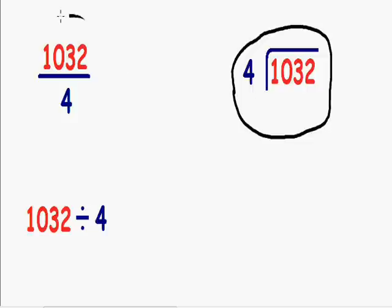Sometimes they could give it to you as a fraction. So notice how the top number of the fraction or the numerator, the 1032, always goes on the inside of long division and the bottom number of the fraction, the 4, goes on the outside of the long division.